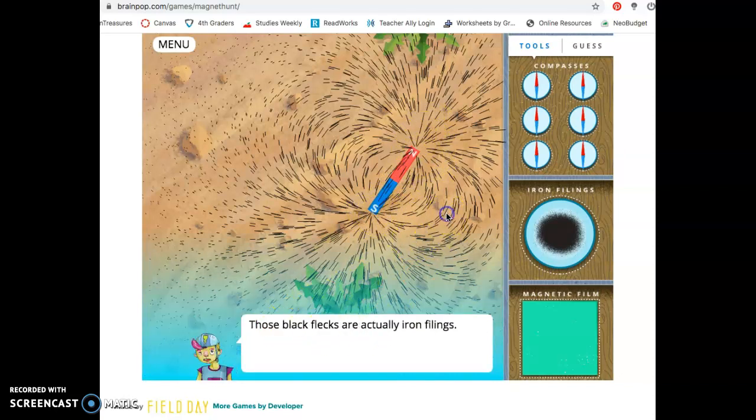You can see the magnet filings are attracted to South Pole and the North Pole of the magnet. Whoa! What just happened? Those black flecks are actually iron filings. They line up with the magnetic field around the magnet. That's awesome! Yeah, it's pretty sweet. Magnetic fields are invisible. But the iron filings let us see exactly what the magnetic field looks like.